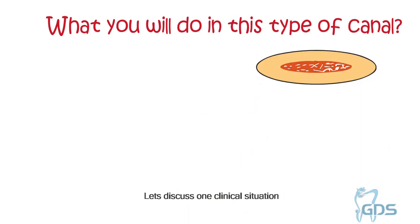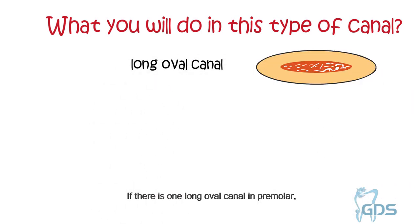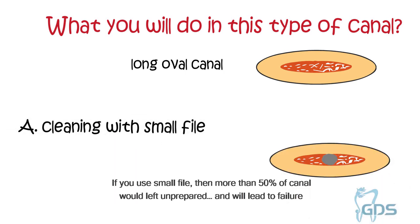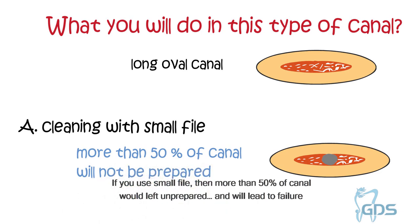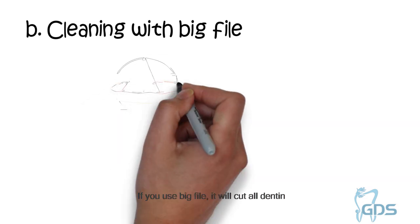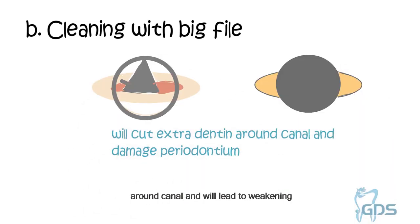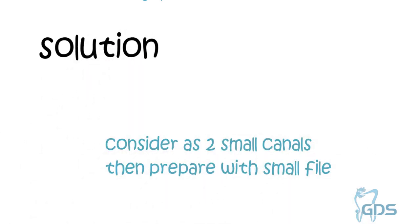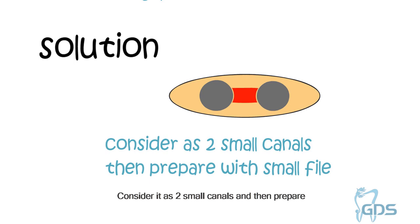Let's discuss one clinical situation. If there is one long oval canal in a premolar, how would you prepare this canal for obturation? If you use a small file, then more than 50% of the canal would be left unprepared, leading to failure. If you use a big file, it will cut all the dentine around the canal, leading to weakening of the canal wall and damage to the periodontium. The solution is to consider it as two small canals and then prepare it accordingly.